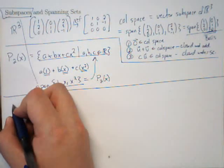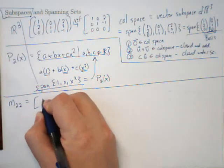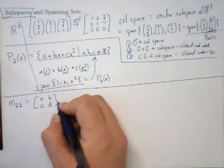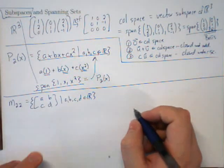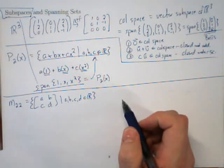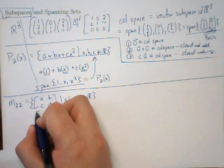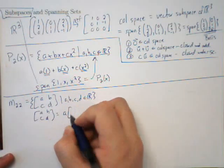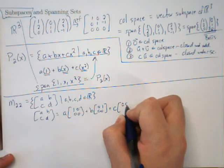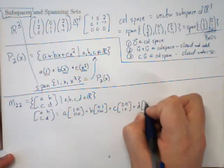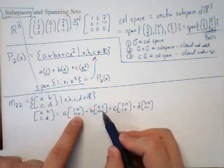Now let's switch gears and go to a new space: matrices. Let's take M22, the set of all 2×2 matrices of the form [A, B; C, D] where A, B, C, D are real numbers. You can take any such matrix and rewrite it as A times [1,0;0,0] plus B times [0,1;0,0] plus C times [0,0;1,0] plus D times [0,0;0,1]. That means every matrix is a linear combination of these four matrices.